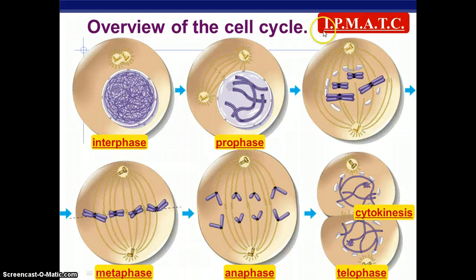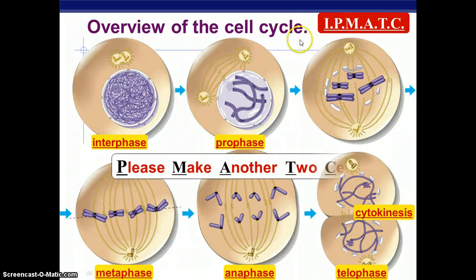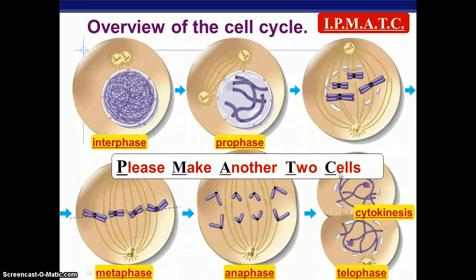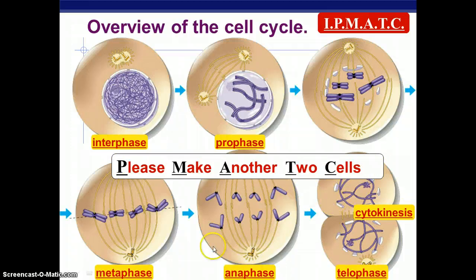Or you can say 'Please Make Another Two Cells' — Prophase, Metaphase, Anaphase, Telophase, and Cytokinesis. These are the five steps of mitosis. And remember that after this, the cell goes back into interphase: G1, S, and G2.